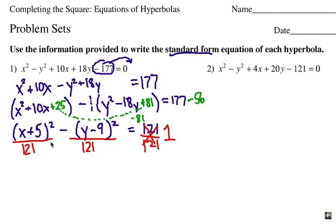All right, now notice that that will give us a negative 5, positive 9 center. The a value is going to be 11 because 121 is 11 squared, and the b value is also 11. Let's look at number 2.